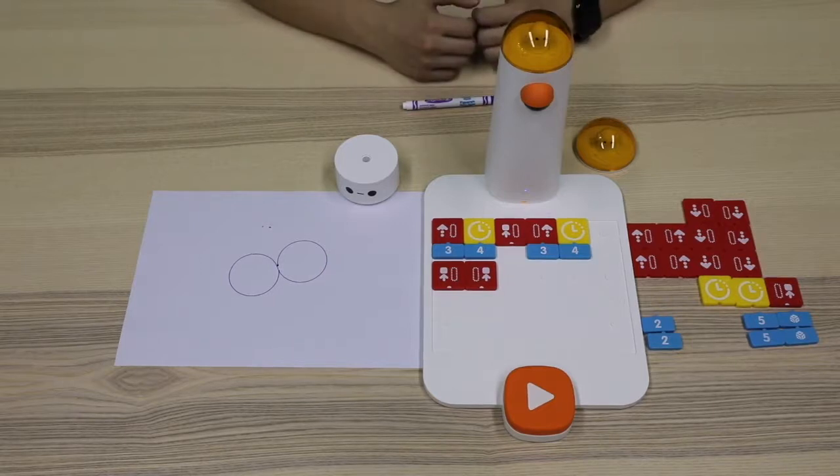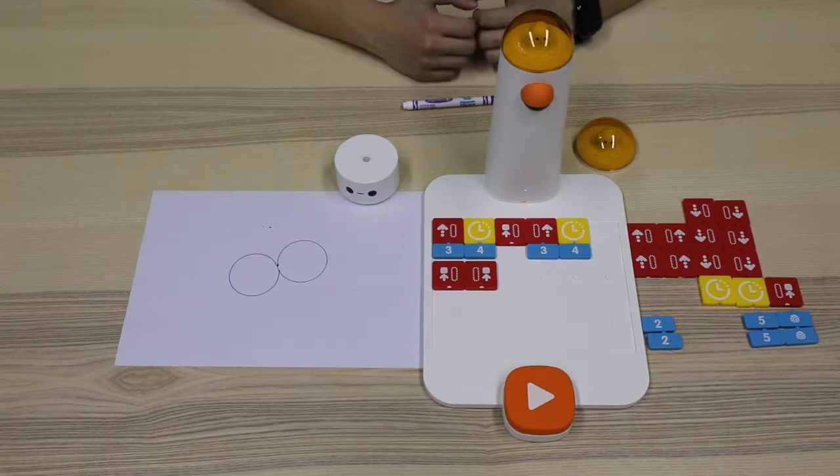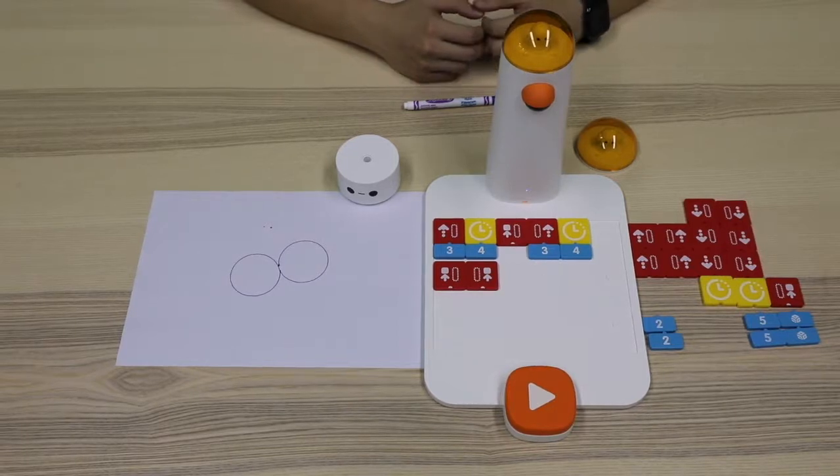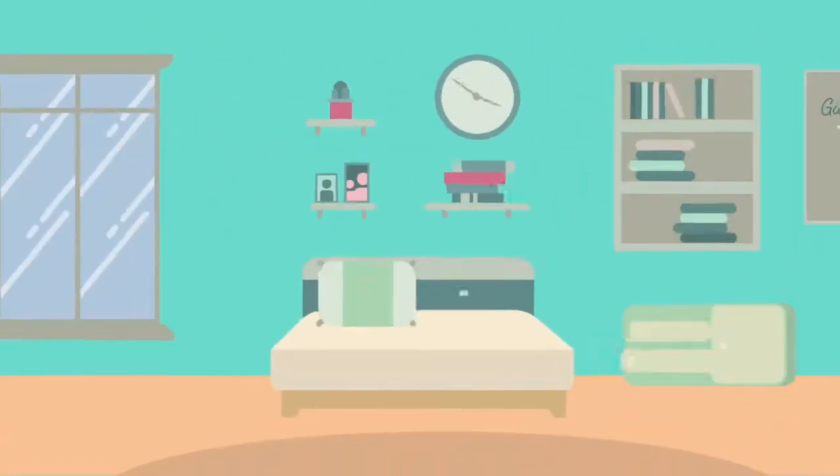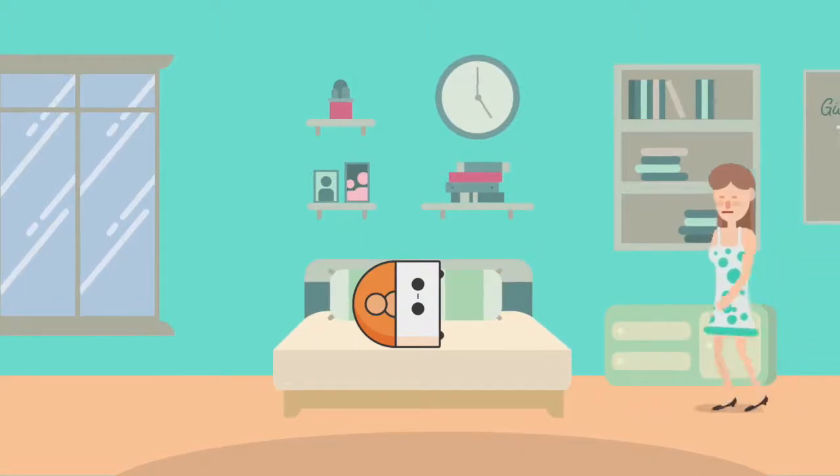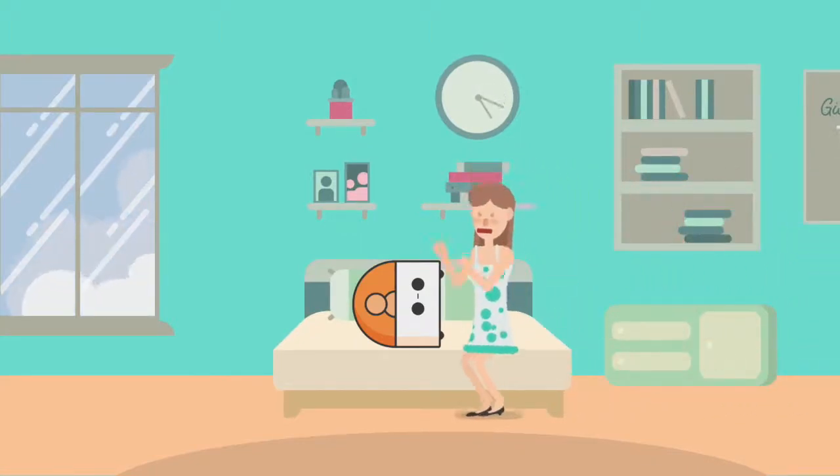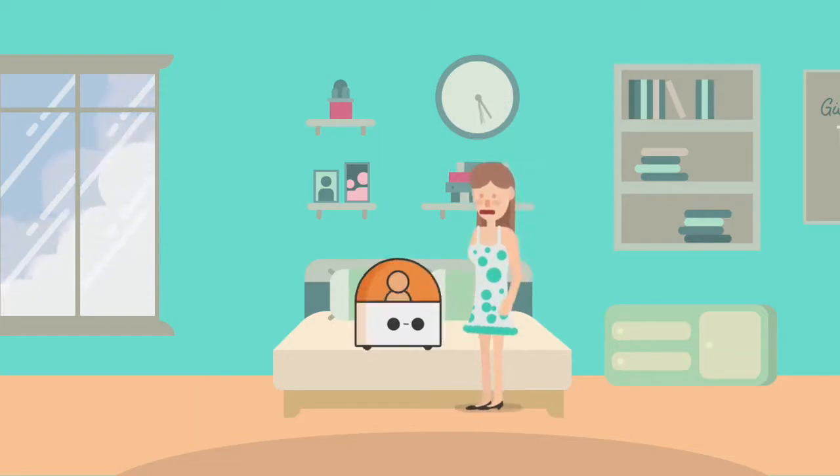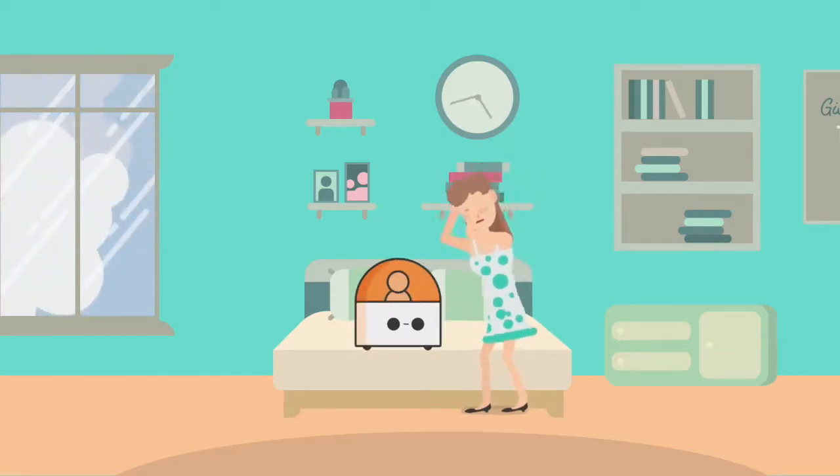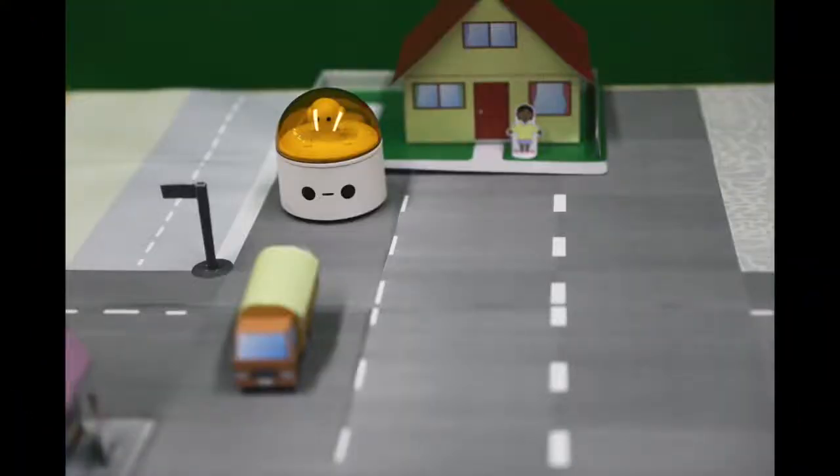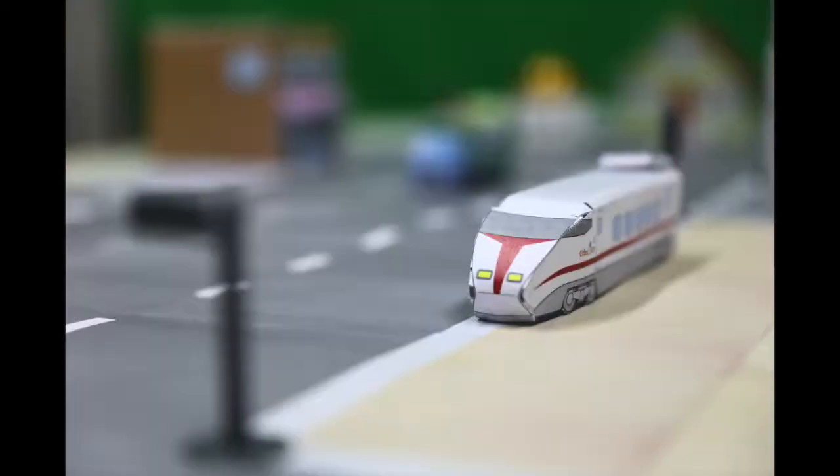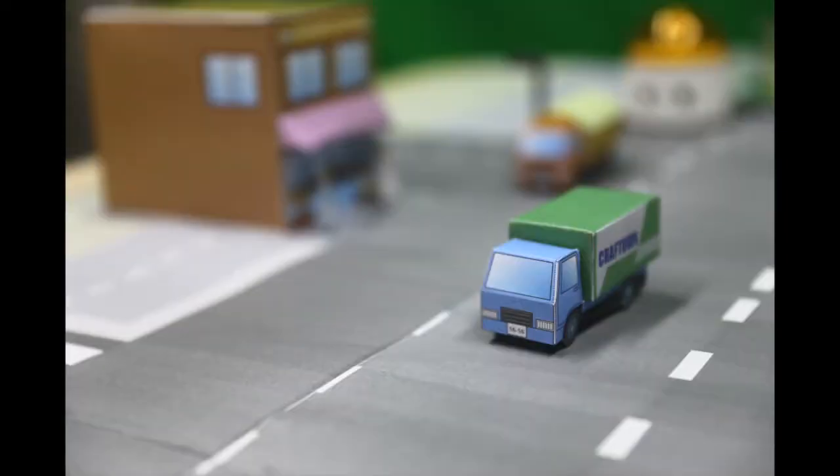When Matata Bolt gets up late, his mom is upset. In order to catch the time, Matata Bolt needs to drive a little bit fast, then usually on his way to school. Matata Bolt, wake up. You are going to be late. Oh, I forgot to set the clock. Hurry up. You need to go right now.